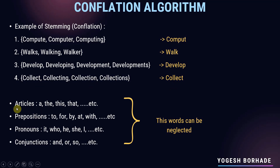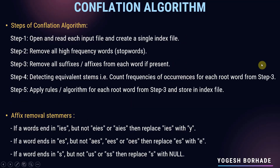We can also remove articles, prepositions, pronouns, and conjunctions from the document, query, or sentence. Now, the steps of the conflation algorithm for generating the document representative are: Step 1 — open and read each input file and create a single index file, storing all outputs in that index file.